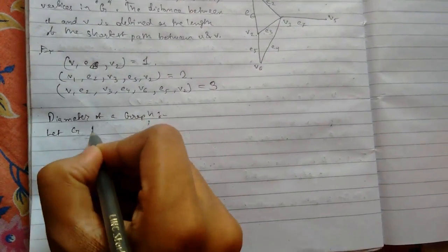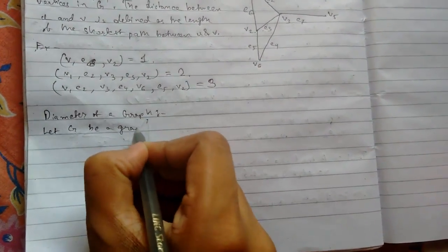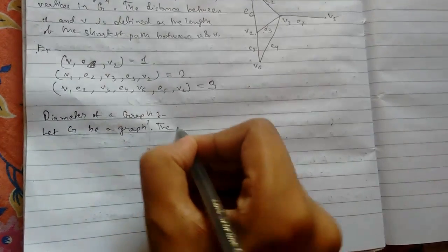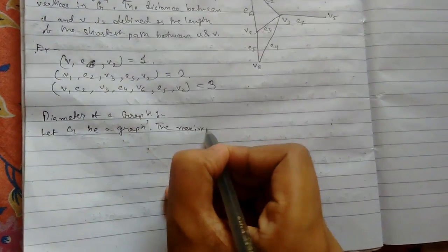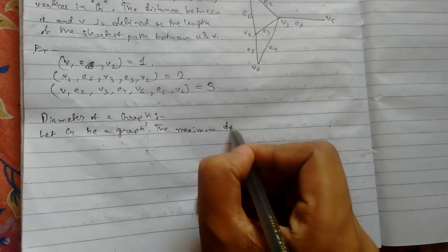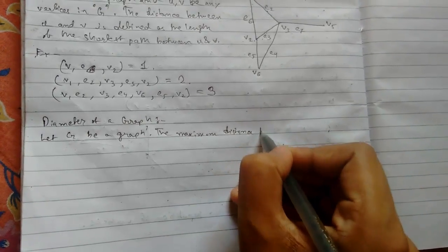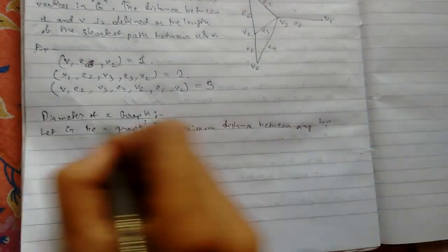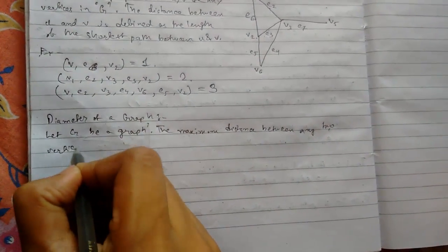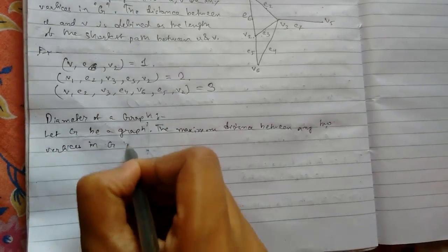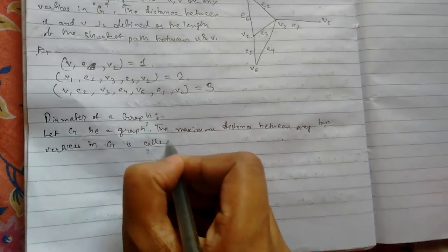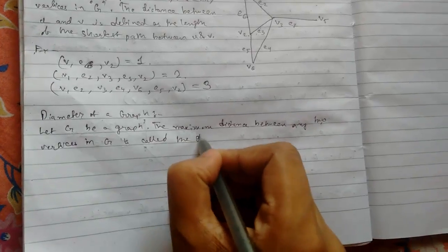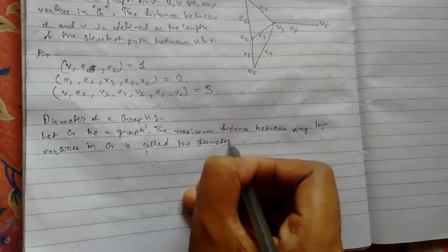Let G be a graph. The maximum distance between any two vertices in G is called the diameter of the graph.